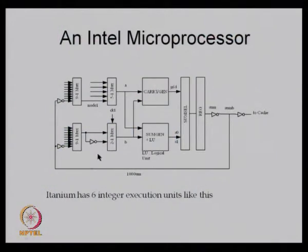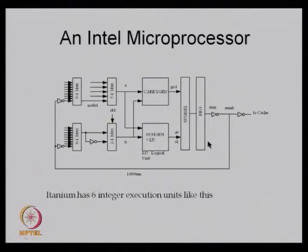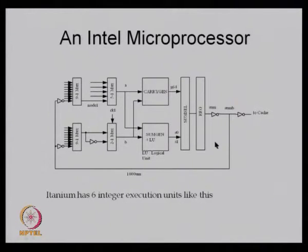A typical Intel microprocessor is shown here. You can see different blocks: there is an input data line, an output data line going to cache, two blocks which essentially do the maths, a control block, bit slices, and depending on the logical operation you want to do, you can proceed further. There are registers and buffers, and finally you have some kind of output.